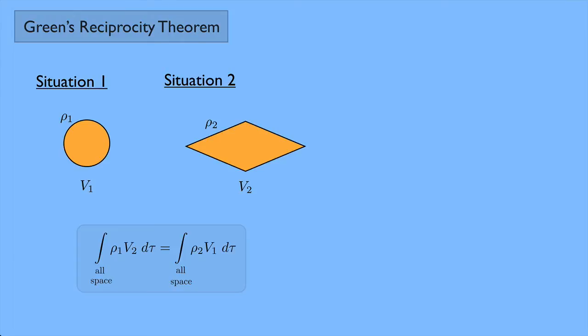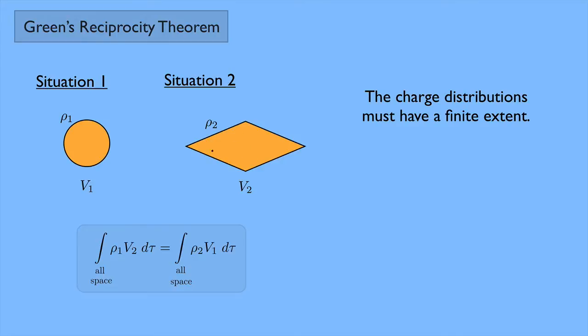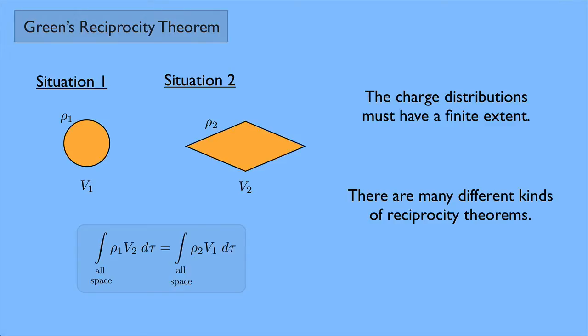A couple of comments about this theorem. First, in order to use it, the charge distributions must have a finite extent. In other words, for this plane here, I couldn't have an infinite plane, but a small square of charge is totally allowed. Also, there are many different kinds of reciprocity theorems — not just in electricity and magnetism, but throughout mathematics and physics. This is just one particular type.